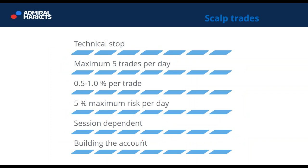For scalp trades, we need to use technical stops. Maximum 5 trades per day, with 0.5% to 1% risk per trade, and 5% maximum risk per day. Why 5%? As soon as you cross the 5% risk threshold, your account is in the danger zone. Of course, if you use extremely low accounts like $100–$200 and you don't care about losing that amount because you want to build to $3,000–$10,000, you can allow yourself higher risk. But if it's all you have, never ever cross 5% if you're scalping.